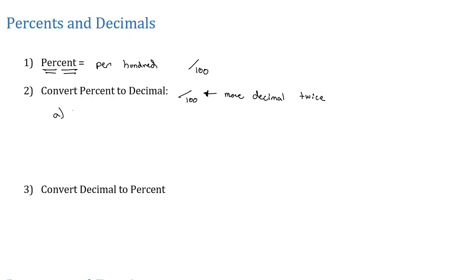So if I see 78%, that means 78 per 100. And so we move that decimal point twice, 1, 2, gives us 0.78 as a decimal equivalent to that 78%.